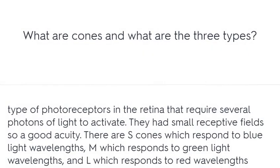What are cones and what are the three types? Photoreceptors in the retina that require several photons of light to activate, with small receptive fields and good acuity. There are S cones responding to blue light, M cones responding to green light, and L cones responding to red wavelengths.